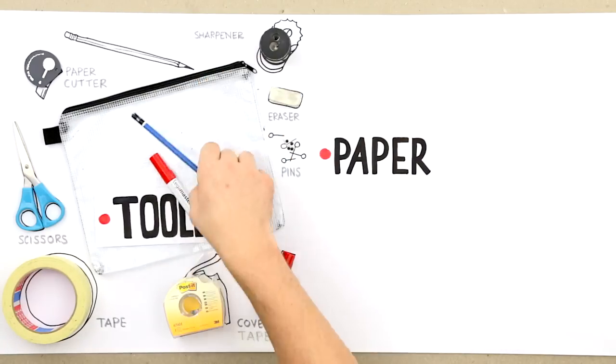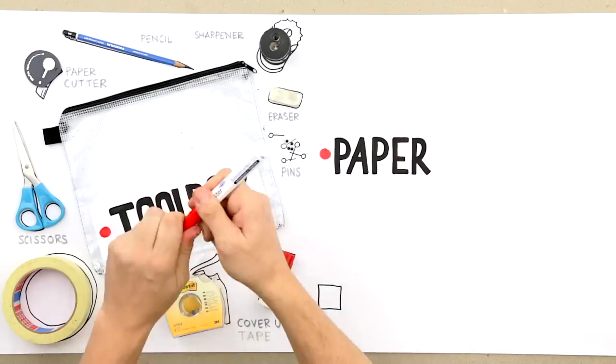An eraser, a sharpener and a pencil to make quick sketches. Yep, everything is here.